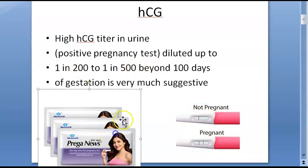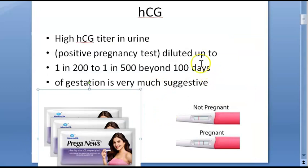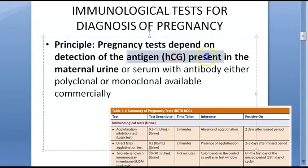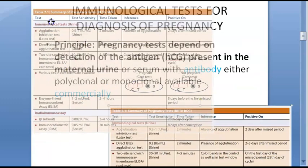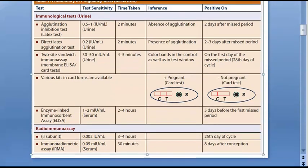A urine pregnancy test uses agglutinating sera reagent for detection of HCG — it is an immunoassay, an antibody-antigen reaction. They detect the antigen HCG using a commercially available antibody. Tests available include agglutination inhibition test, direct latex agglutination test, and sandwich ELISA — these can all be done on a card test. One line means not pregnant; two lines means HCG is present, though this can indicate ectopic pregnancy or molar pregnancy, not necessarily a normal intrauterine pregnancy.